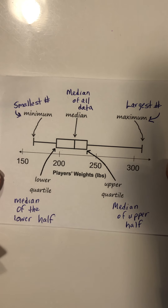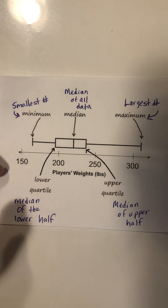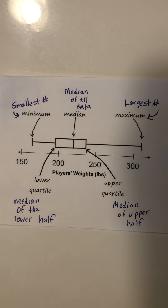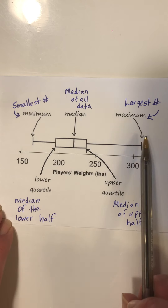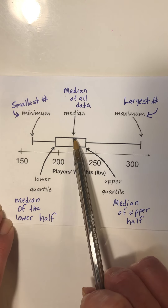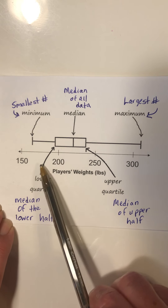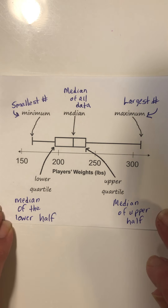They often call this the five-number summary. If asked what the five numbers in a box and whisker plot are, you would say: the minimum, the maximum, the median (which is in the middle), the lower quartile, and the upper quartile. That is your five-number summary. Now let's look at how you would create a box and whiskers plot.